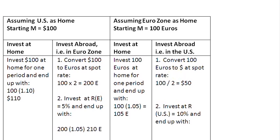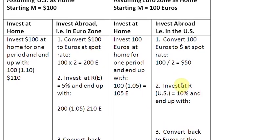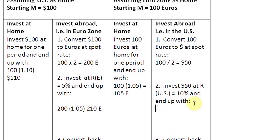Now what do we do with these 50 dollars? We invest these 50 dollars at the rate of interest in the US, which is 10%. At the end of one period, investing 50 dollars at 10% gives us 55 dollars.